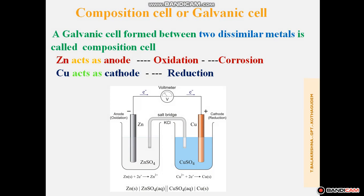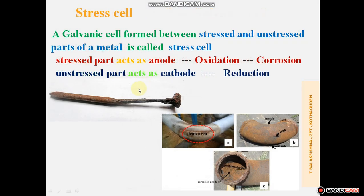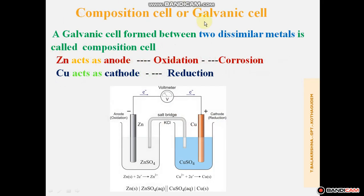First, we discuss the Composition Cell or Galvanic Cell. A galvanic cell formed between two dissimilar metals is called a Composition Cell or Galvanic Cell. If two dissimilar metals are electrically connected and exposed to an electrolyte, a Composition Cell is formed. In the cell, the more reactive metal acts as the anode and undergoes corrosion, while the less reactive metal acts as the cathode. This type of corrosion is called Galvanic Corrosion.